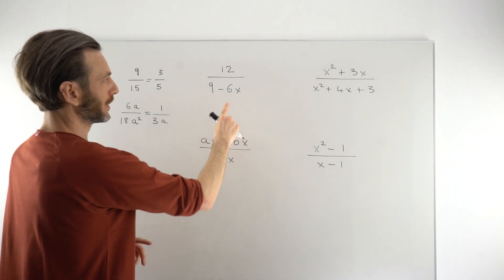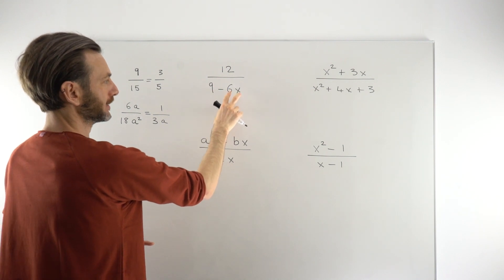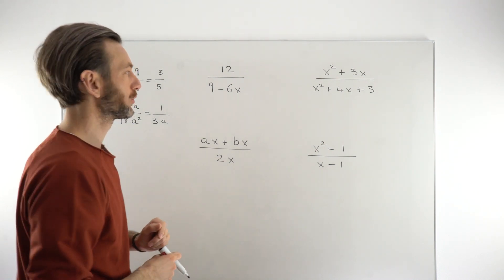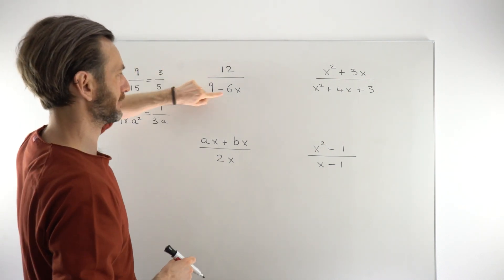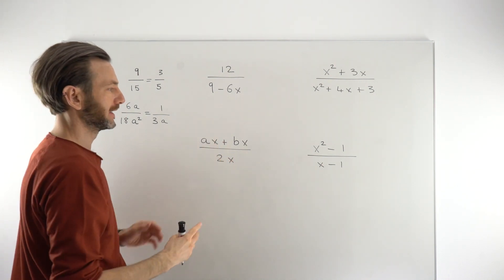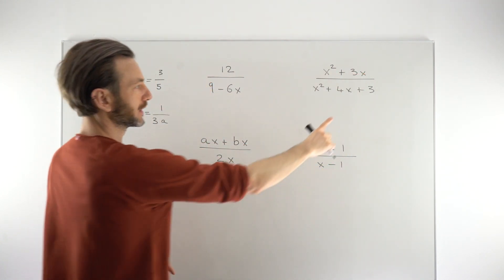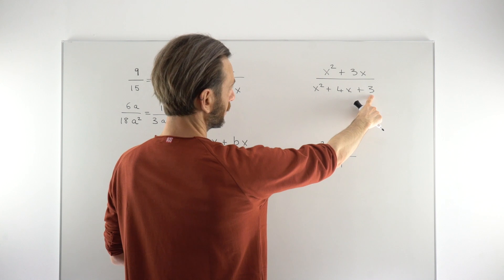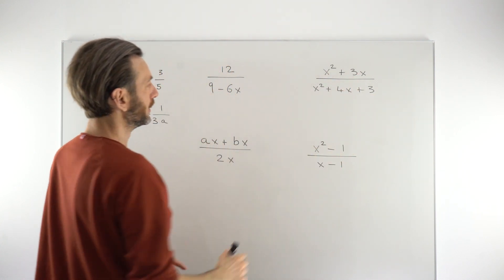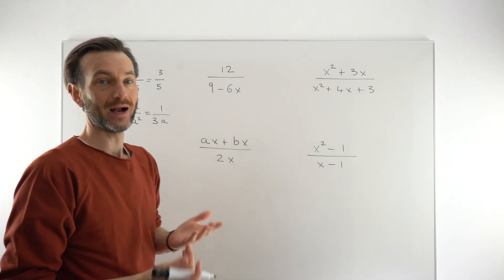Starting with this first one, we could just look at these terms — 12, 9, and the 6x term — and see that there's a common factor of 3. So we could go straight to dividing everything by 3, and that would be fine. But that method of just looking at things and dividing might work for a couple of these, but it's going to start to break down where there's no obvious common numeric factor between terms. So we need a more formal method, and the formal method is factorizing.